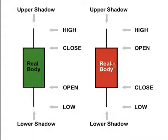So when you see a red body, it means the opening is higher than the close. When you see a green body, it means the opening is lower than the close.